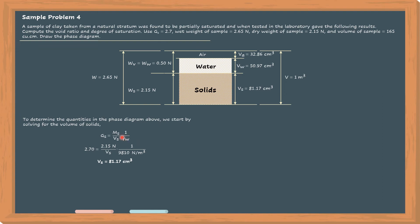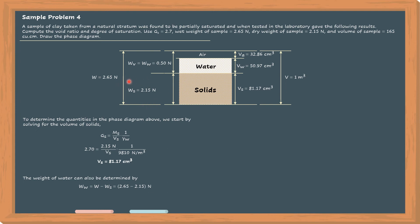Note that the unit weight of water is equal to 9,810 N per cubic meter, or 9.81 kN per cubic meter. Next, let us determine the weight of the water. The weight of the water from the phase diagram is equal to 0.50 N. The weight of the water is computed from the total weight of 2.65 N minus the known weight of the solid, so the weight of water is the difference of the total weight and the weight of the solid, which equals 0.5 N.